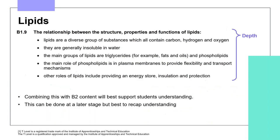Lipids are covered within B1 as a diverse group of substances containing hydrogen, carbon and oxygen, and are generally insoluble in water. Phospholipids are introduced as one of the main groups of lipids, along with triglycerides. Phospholipids play a main role in the plasma membrane, providing flexibility and transport mechanisms. Other roles of lipids include providing an energy store, insulation and protection. As with proteins and carbohydrates, combining B1 and B2 content in delivery will support student understanding.